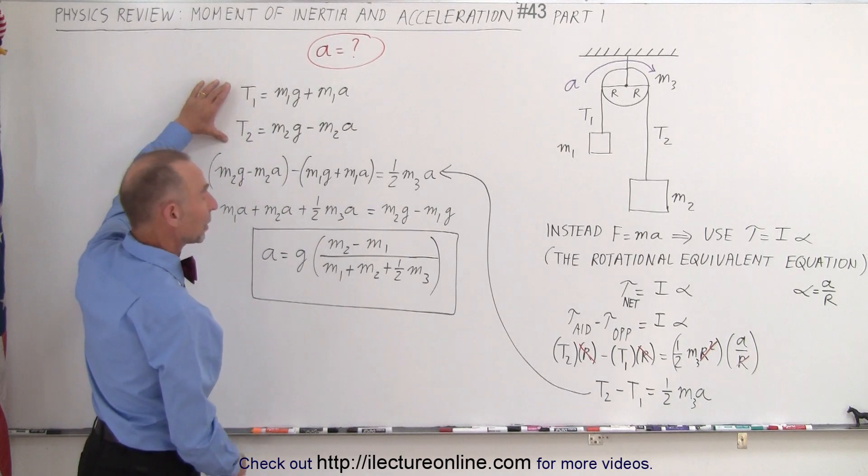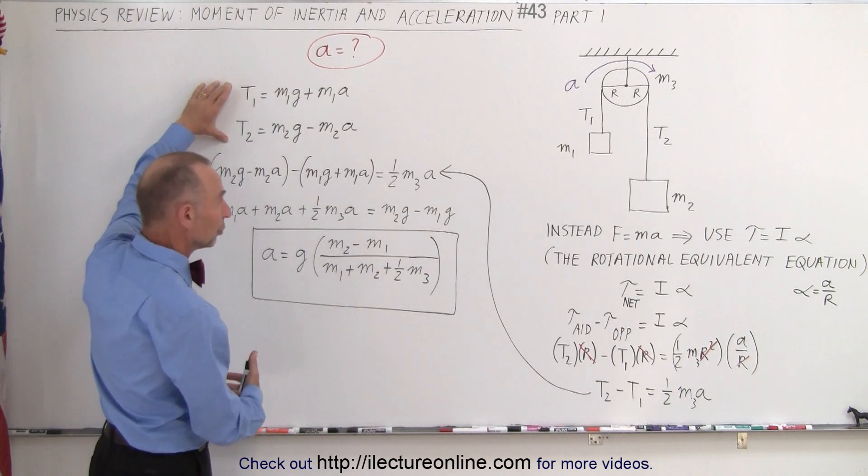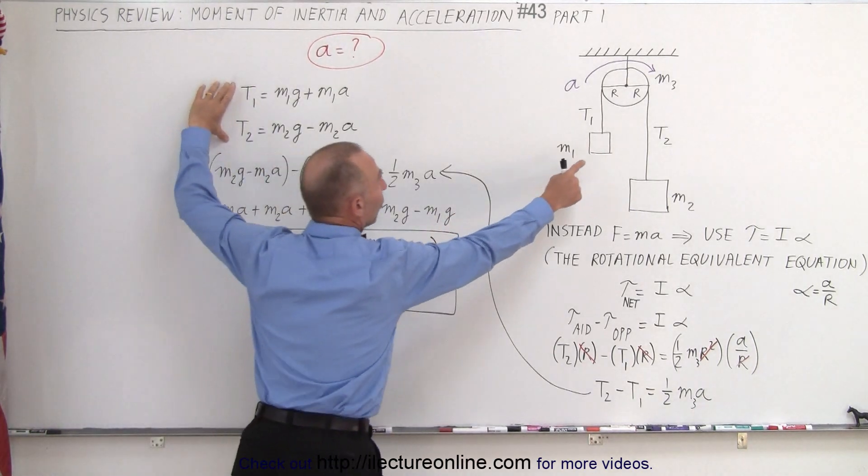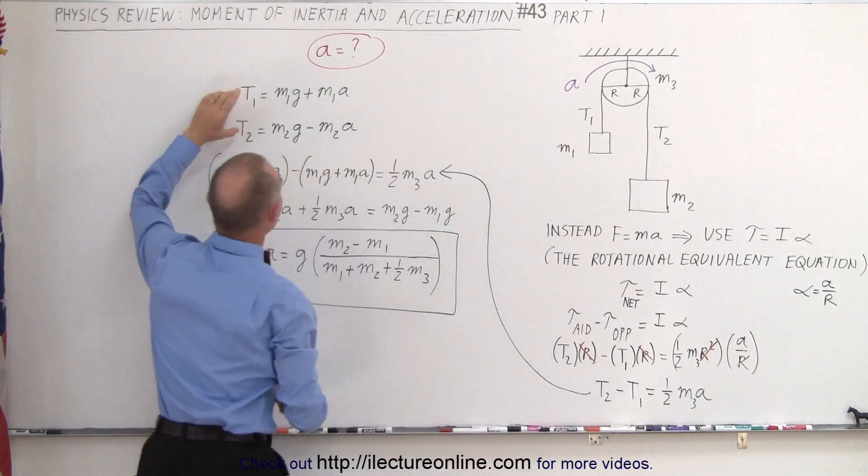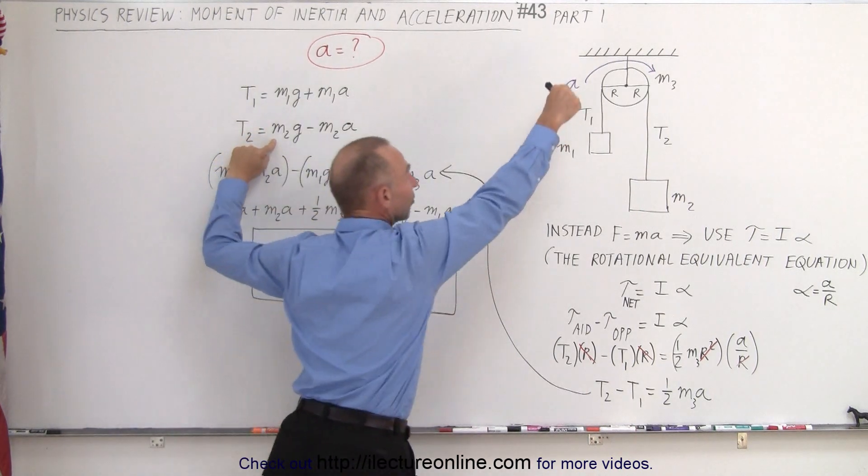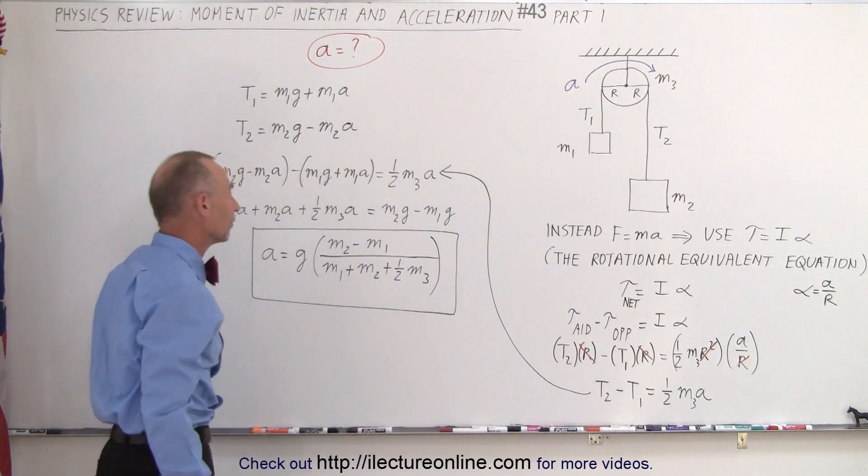And remember that this is how we calculate tension one and tension two. Tension one is the weight of this object plus M1A because it's being pulled up against gravity. T2 is M2G minus M2A because it's allowed to accelerate downward with gravity.